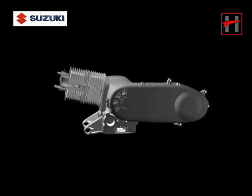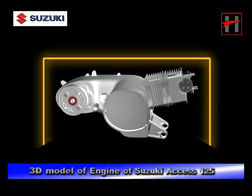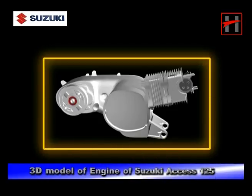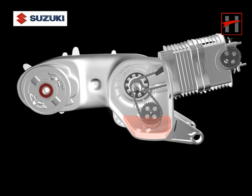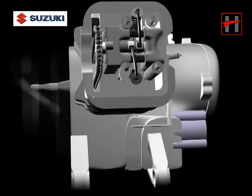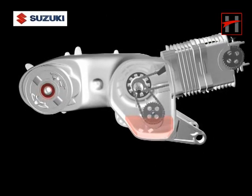This is a three-dimensional model of the engine of the Suzuki scooter Access 125. In this training module we will use this three-dimensional model to show you in a step by step manner how the engine oil lubricates the various parts of the engine.